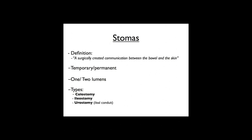Moving on to stomas. A stoma is a surgically created communication from the bowel to outside the body through the skin. There are many different types - they can be defined as temporary or permanent, may have one or two lumens, and are categorised by which part of the bowel they come from: colostomy from the colon, ileostomy from the small bowel, or urostomy from the urinary tract.